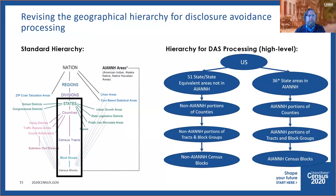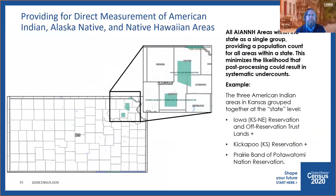For the non-American Indian area pathway, we have 51 state or state-equivalent areas following that pathway down through counties, tracts, block groups, and blocks — the optimized block groups. For American Indian areas, here's an example with Kansas: there are three American Indian areas in Kansas grouped together at the state level and used in the optimization — the Iowa-Kansas-Nebraska reservation and off-reservation trust land, the Kickapoo Kansas reservation, and the Prairie Band Potawatomi Nation reservation.